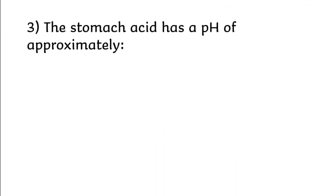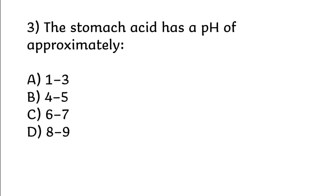The stomach acid has a pH of approximately: 1 to 3, 4 to 5, 6 to 7, 8 to 9. Correct answer is Option A: 1 to 3.